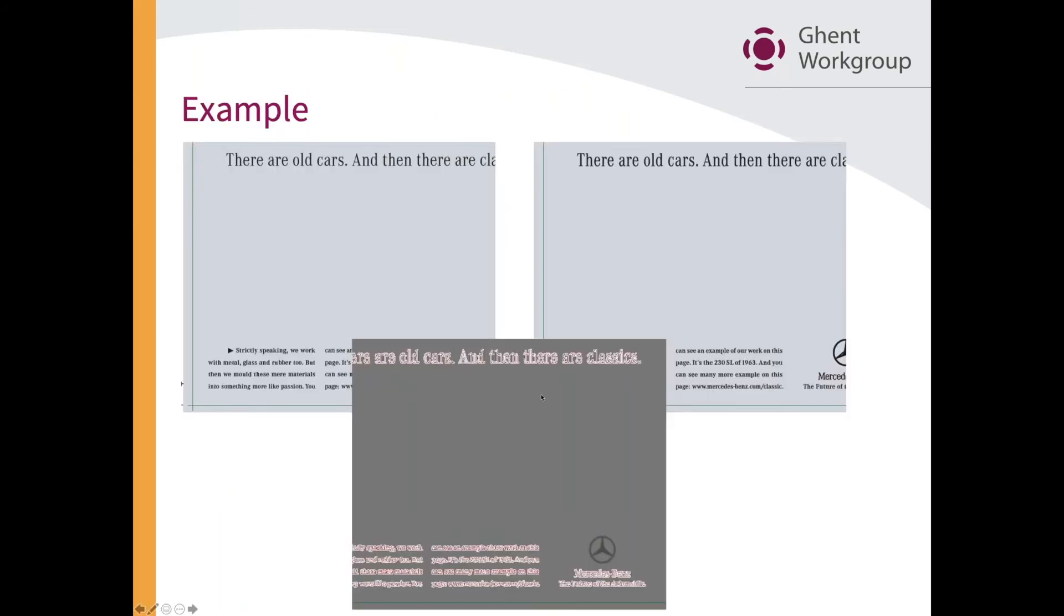The result is this: if I take a file like the one on the left that uses text and I convert that text to outlines, I get what you see on the right. If you look at the sentence 'There are old cars,' you will see that on the left it looks thinner than it is on the right. The difference is thin fill on the left because that's real text, and fat fill on the right because that's a vector.